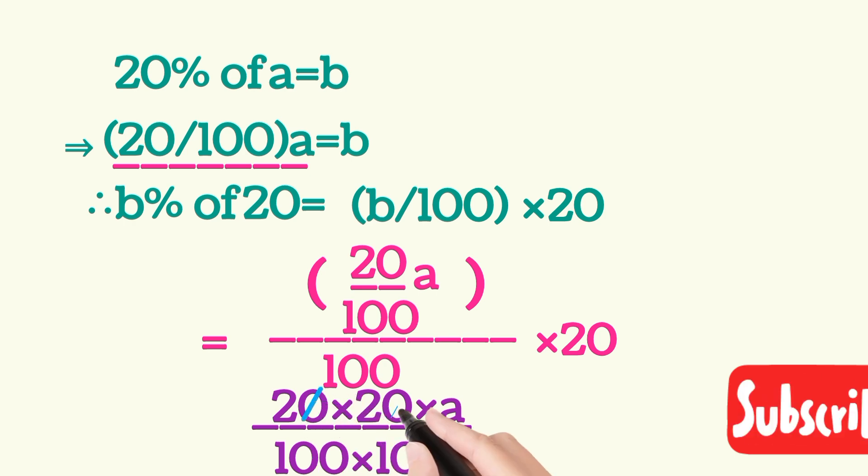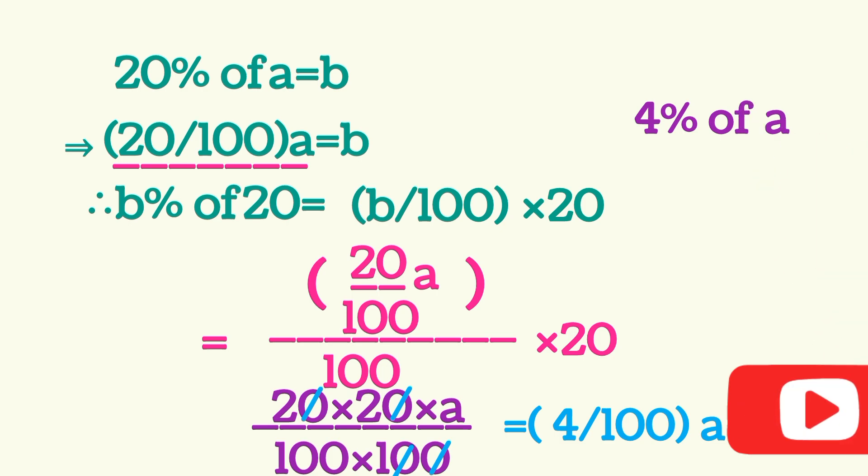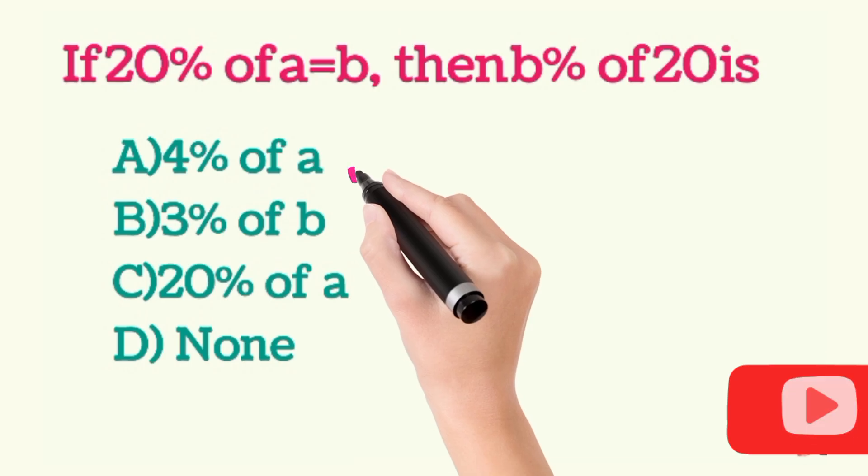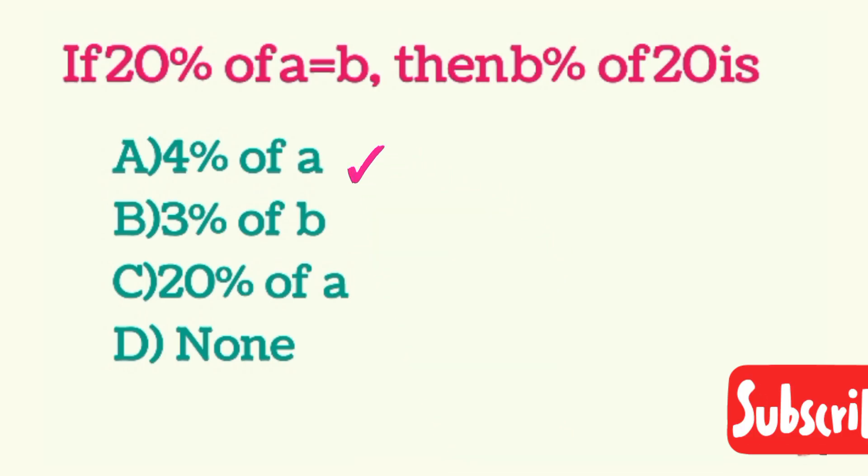Now, this zero will be cancelled out with these zeros. So we will get 4 upon 100 A, that is 4% of A. So option A is correct.